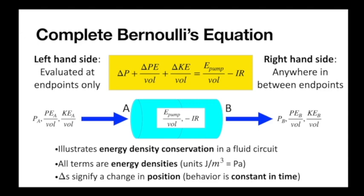A student asks how choosing the left-hand side and right-hand side works. Once you pick your start point and end point, for something like delta PE you evaluate it based on the height at your final and initial — rho g h final minus rho g h initial. The pumps you account for are only those in between the start and end points. If they're not in between and are on either side, you don't include them. So let's do an example.